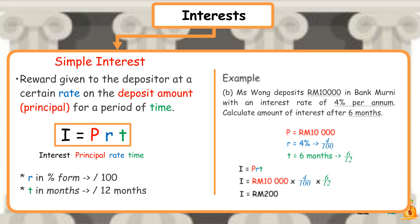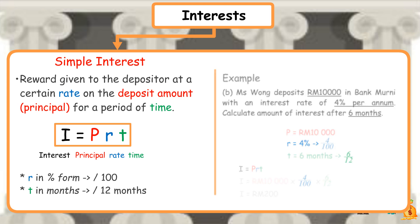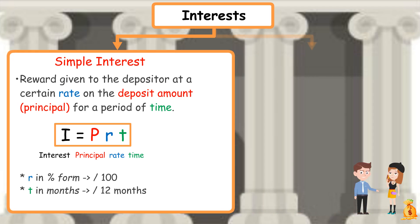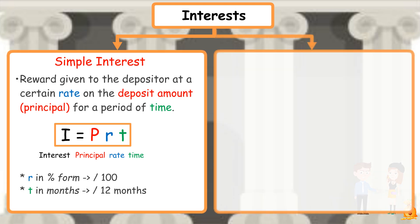For simple interest, the longer the saving period, the higher the returns. The higher the interest rate, the higher the returns. The second type of interest is compound interest.